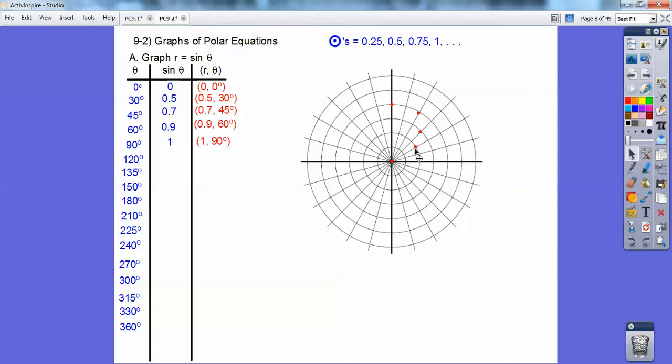And then, so here's 0.7, 45 degrees. It's a little bit less than 0.75. Here's 0.9, 60, and then finally here's 1. 1 would be four circles out, 1, 90 right there.